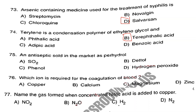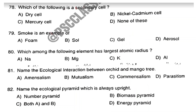Question number 76. Which ion is required for the coagulation of blood? Answer is Option B: Calcium. Question number 77. Name the gas formed when concentrated nitric acid is added to copper. The answer is Option A: NO₂. Question number 78. Which of the following is a secondary cell? Answer is Option B: Nickel cadmium cell.